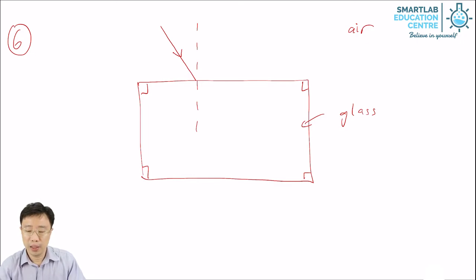You know that when light travels from air to glass, optically less dense to optically denser, it will bend towards the normal. So we need to draw the normal to know how to bend the light properly.